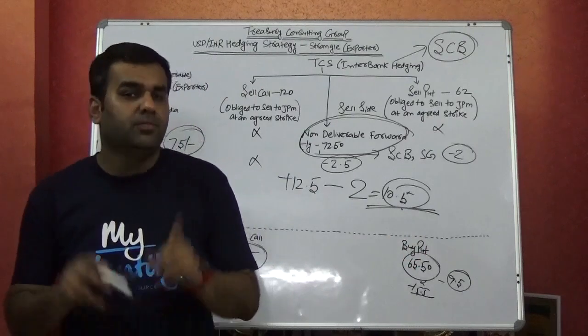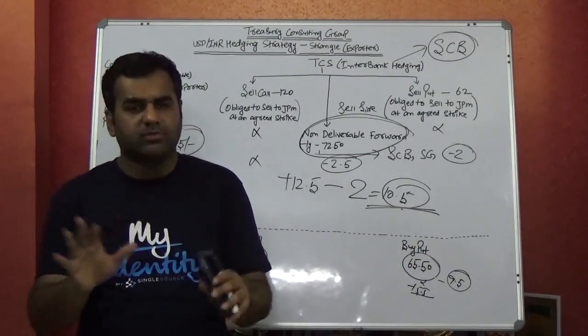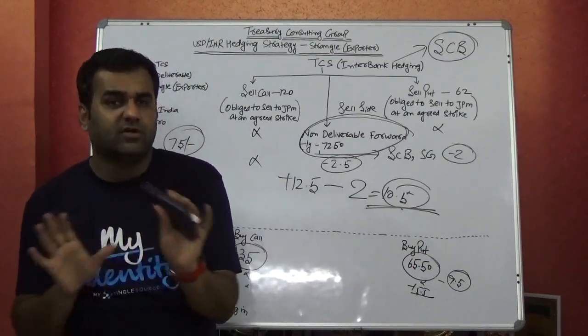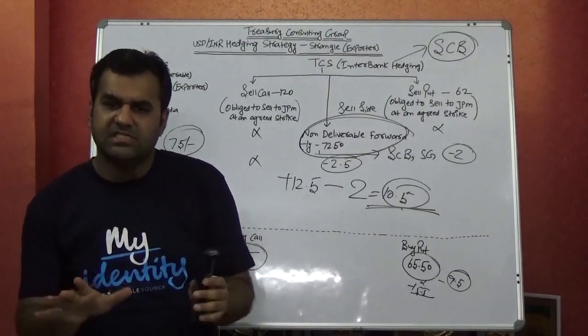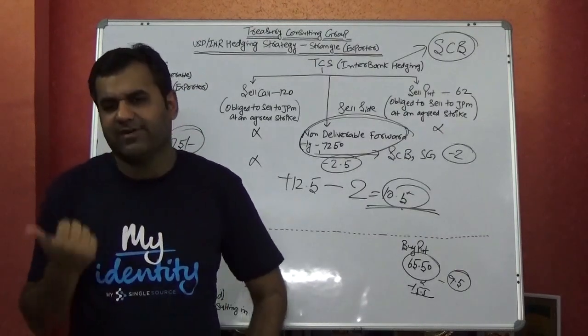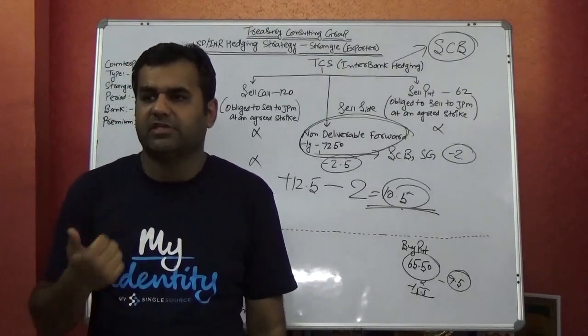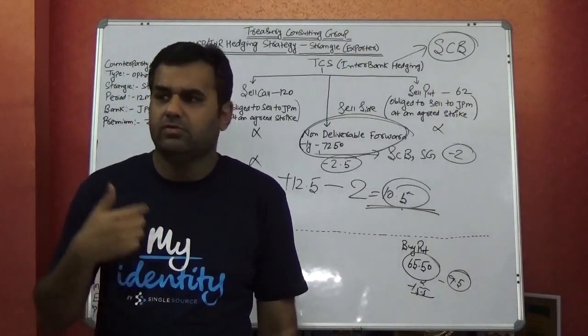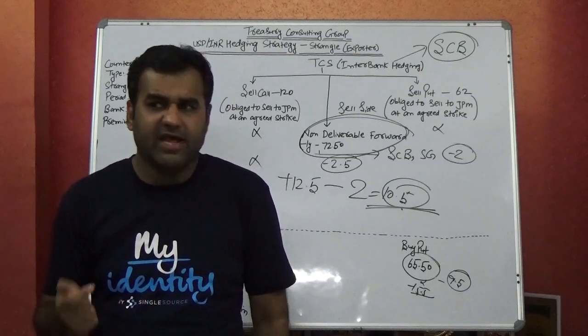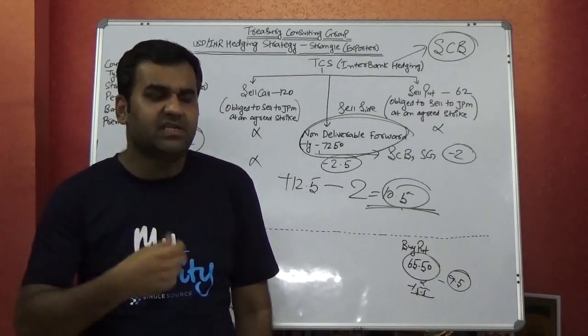But of course if your treasury function is not capable, you are most welcome to continue with the obsolete instrument which is forward contract. And be happy once the losses come. Stay happy.